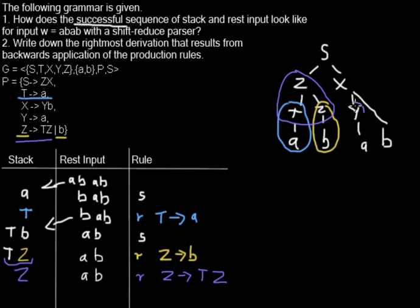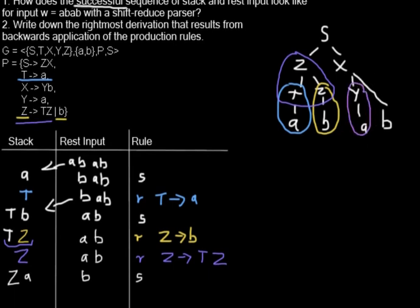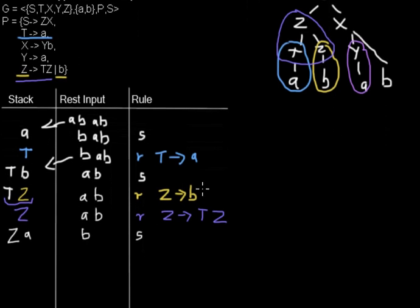I will later reduce the A but first I have to shift it. So I perform another shift: I shift the A, and I'm left with Z and A to its right. Now I can reduce the A using the rule Y derives to A. The Z is kept, the A is replaced by Y, and the rest input is not touched.